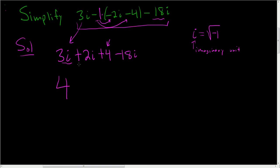And let's see, 3i plus 2i is 5i. And then we still have this negative 18i. All right. So this is 4, and 5i minus 18i is minus 13i.